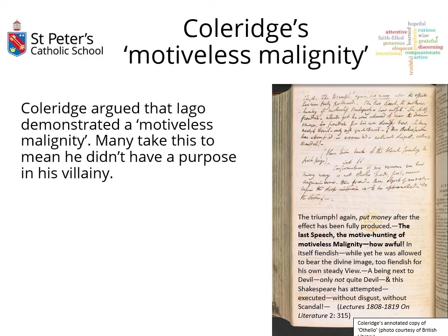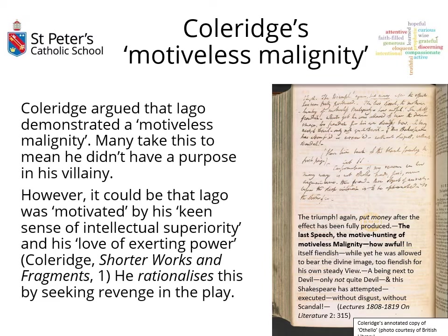Iago has many motives within the play and our task is to question how convincing we find any of those, or whether we end up with a sense that Iago is going to behave this way come hell or high water, and what he has done is find excuses and justifications for the things he wanted to do anyway. Many people take this to mean he didn't have a purpose in his villainy, but I think more what it means is that there's something almost compulsive in Iago's villainy — he is a villain in search of a motive.